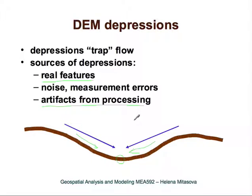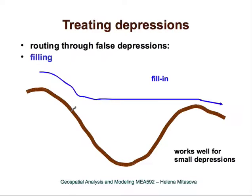Artifacts were mostly the case for older 30-meter digital elevation models, where they were due to interpolation. To create a continuous connected stream network we need to get through these depressions. The most standard method, implemented in almost all flow routing software, is filling.